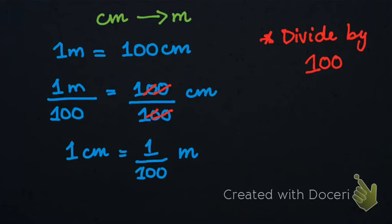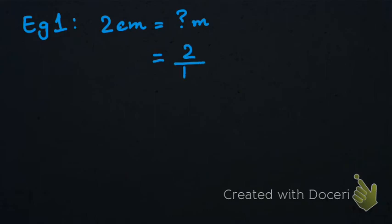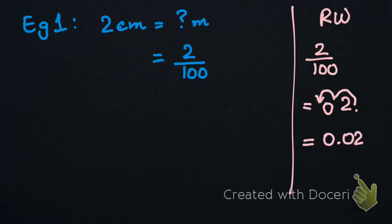Let's do some examples. Example number one: we have to convert 2 centimeters into meters. We are going to do simple division — 2 divided by 100. Because it is 100, we shift the decimal two places, putting a zero, so the answer is 0.02 meters. In 2 centimeters we have 0.02 meters.